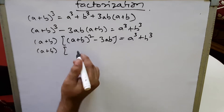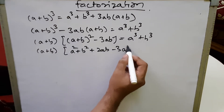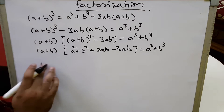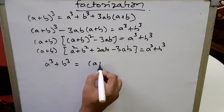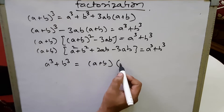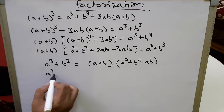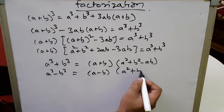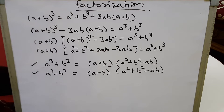Expanding (a+b)², we get a² + b² + 2ab - 3ab = a³ + b³. So a³ + b³ = (a+b)(a² + b² - ab). Similarly, if we solve for a³ - b³, the value we get is (a-b)(a² + b² + ab).